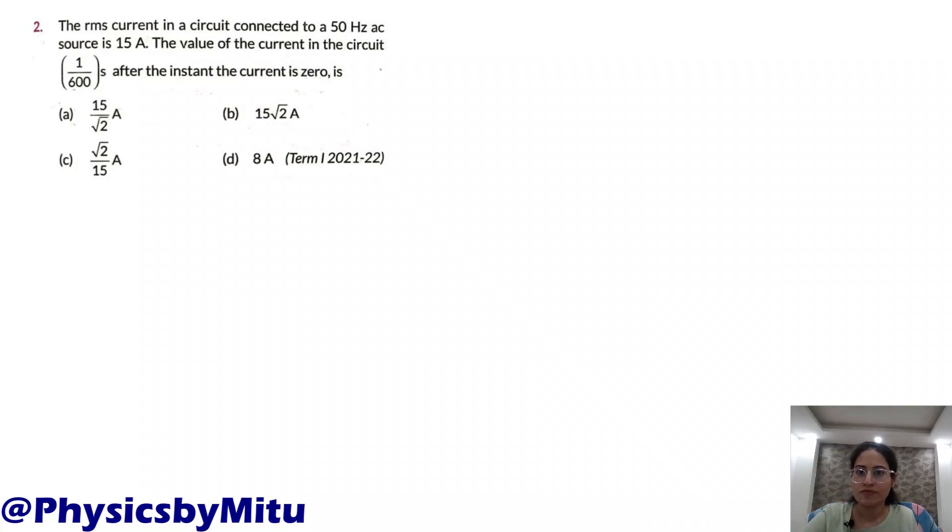The RMS current in a circuit connected to a 50 hertz AC source is 15 ampere. The value of the current in the circuit 1/600 seconds after the instant the current is zero. This is alternating current.